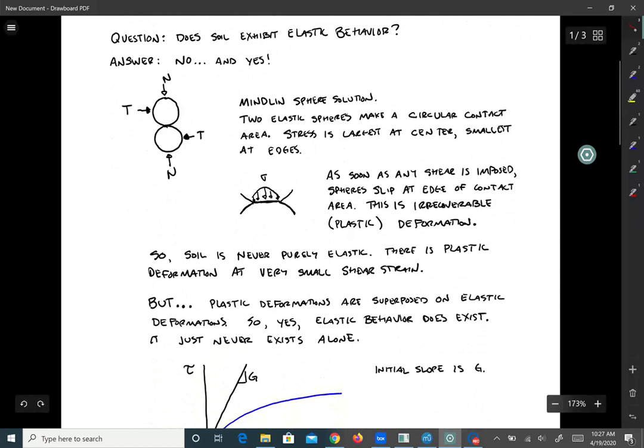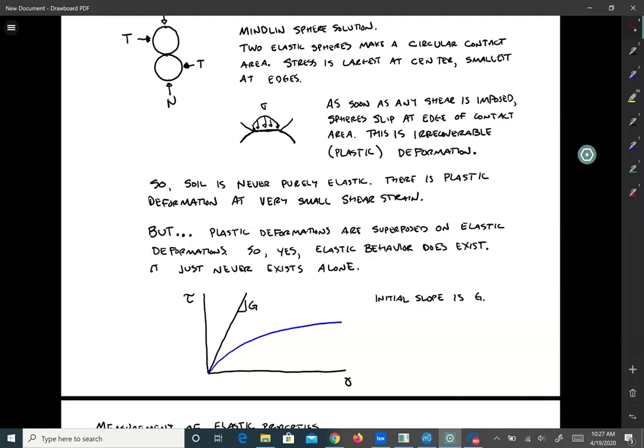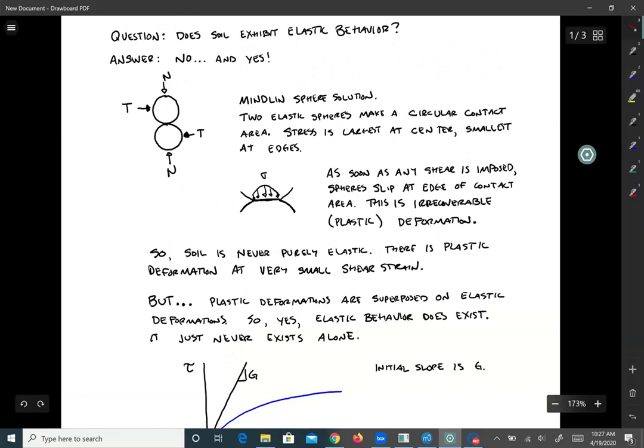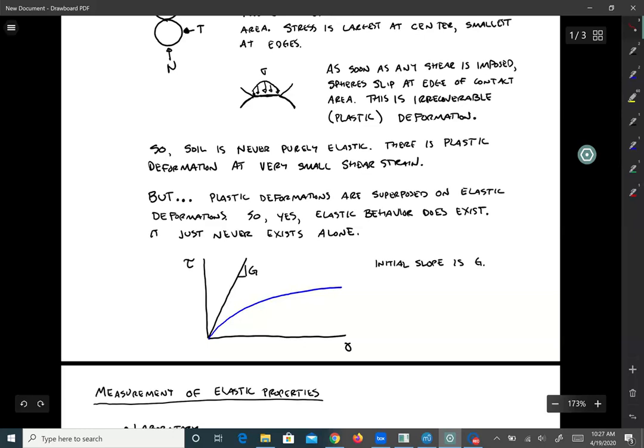But that doesn't mean elastic deformation doesn't exist, it just means it never exists by itself. Actually, plastic deformations are superposed on the elastic deformation. The resulting behavior is a combination of the deformation of the sphere itself, and there's going to be some slip. Same thing for soil. There is elastic deformation, it's just superposed on plastic deformation. Our goal is to try and back out what that elastic behavior is.